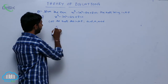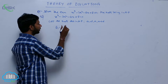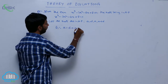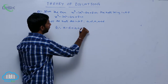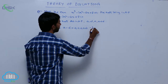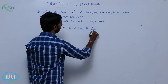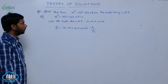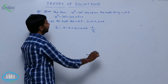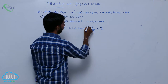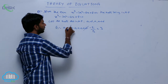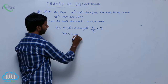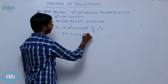First find S1. S1 means sum of the roots, that is A minus D plus A plus A plus D. It is equal to minus p1 by p0, which equals 3. Here minus D and plus D get cancelled, so 3A is equal to 3, which implies A is equal to 1.